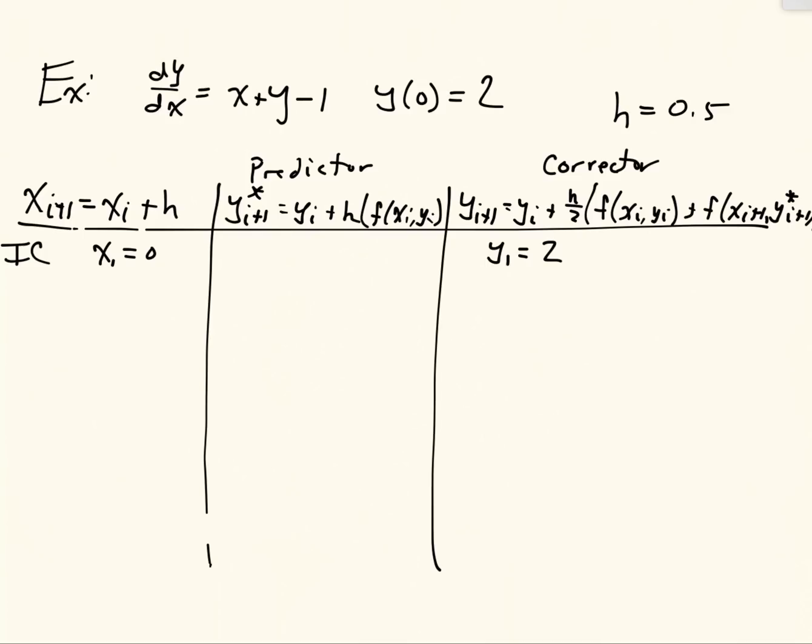Okay, so now we want to compute the next step in our tables. We're going to compute x_2, which equals x_1 plus h, which is 0 plus 1/2, which is just 1/2. And then we have y_2 star, which equals y_1 plus h times our function evaluated at x_i, y_i, which is x_1 plus y_1 minus 1, which is just the right-hand side of the differential equation.